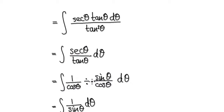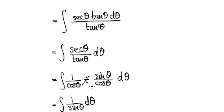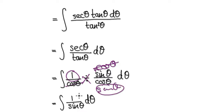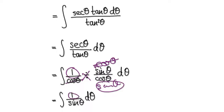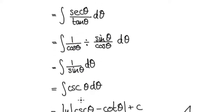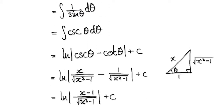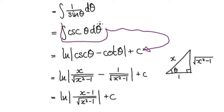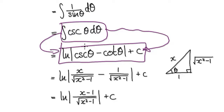Multiplying by the reciprocal gives you cos theta over sin theta. These two cosines cancel each other out, leaving you 1 over sin theta. And 1 over sin theta is cosecant. When you integrate cosecant — we've done this many times, so by now I'm expecting you to be able to integrate this. Integrating cosecant gives us this result, so I'm asking you to accept this.